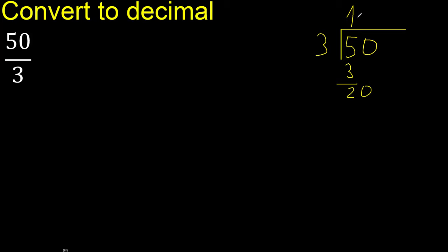Bring down: 20. 3 multiplied by 7 is 21, which is greater. 3 multiplied by 6 is 18, ok. 20 minus 18 is 2. Next.